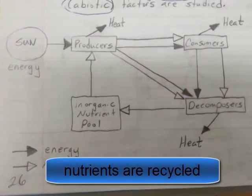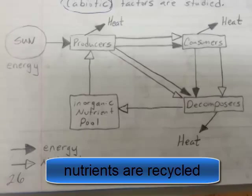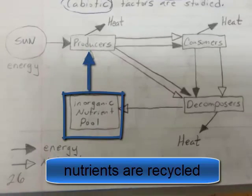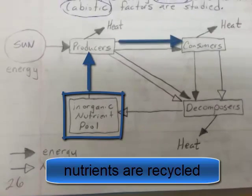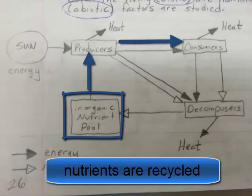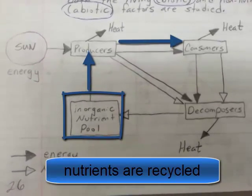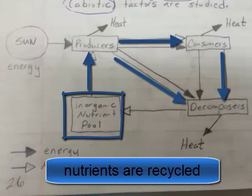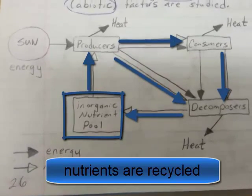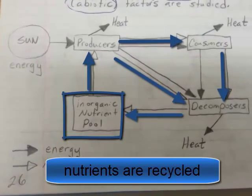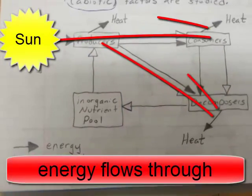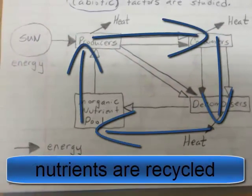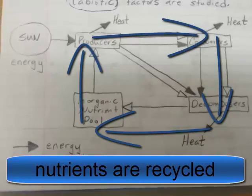Nutrients, on the other hand, are recycled. Notice that the inorganic nutrient pool, which represents molecules, is used by producers and then is passed through the food chain and the trophic levels of an ecosystem. But when those organisms die, the decomposers use whatever energy is left and then recycle those nutrients and molecules back into the inorganic nutrient pool. So while energy comes in, flows through, and is lost in an ecosystem, the nutrients are recycled around and around.